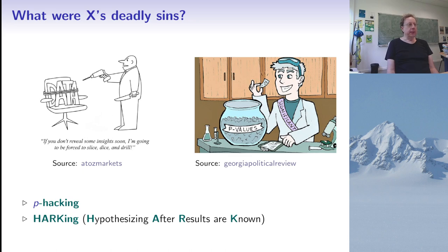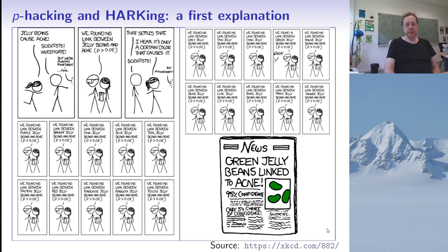So what were the sins of this scientist? He actually used two related methods which are not a proper way of doing statistics, called p-hacking and harking. Harking being an acronym for hypothesizing after results are known. I'm going to explain these problems in more detail.